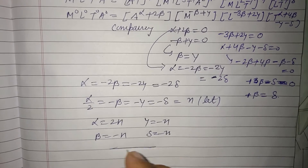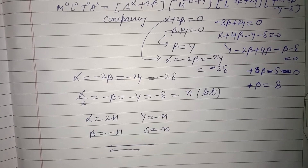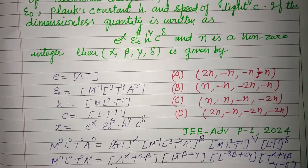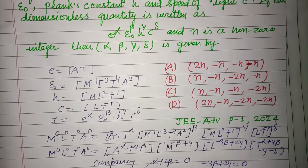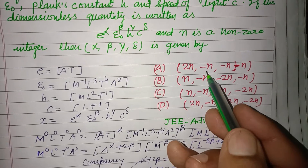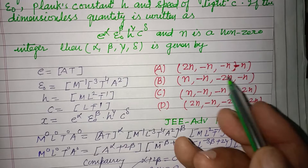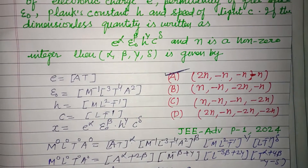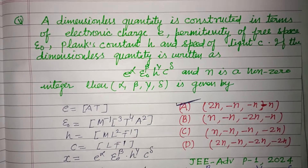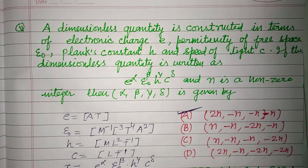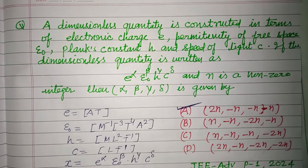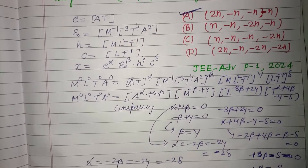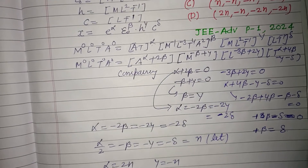From this we get option: (2n, minus n, minus n, minus n), so option A is the correct answer. I hope you got it. Please like the video, subscribe to the channel, thanks for watching, see you next time.